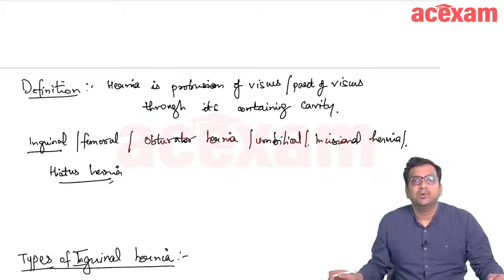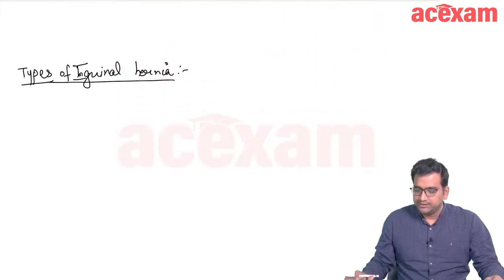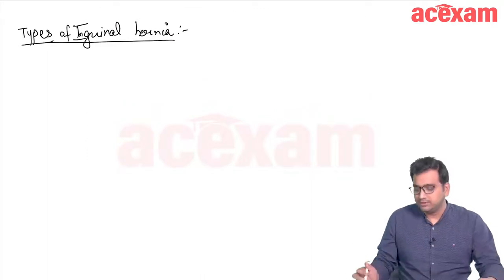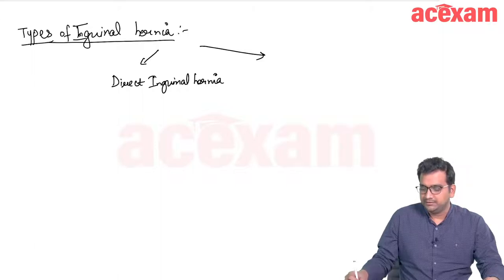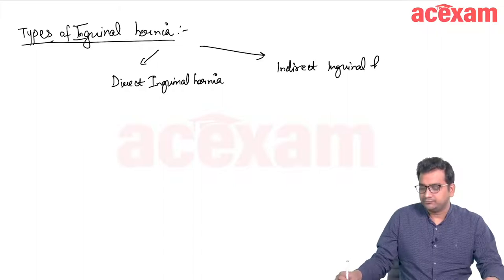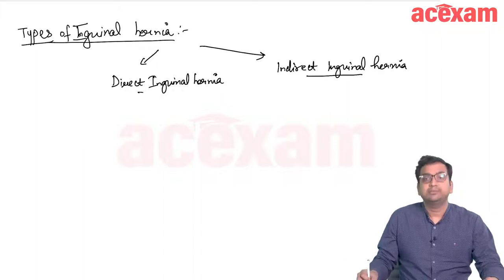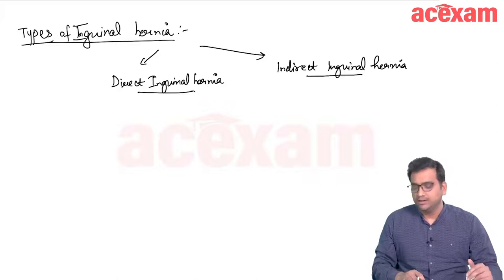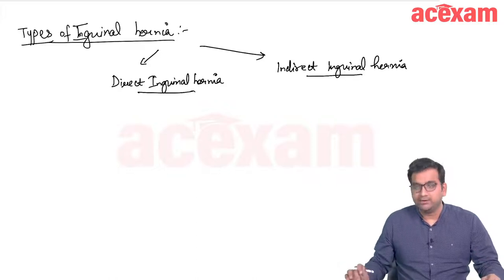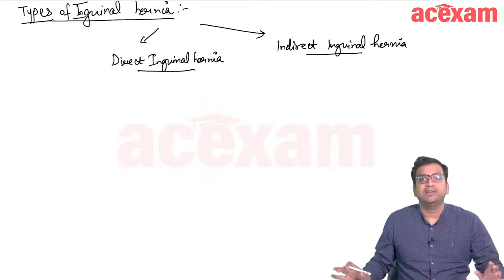We will first start with inguinal hernias. In broad terms, the two main types of inguinal hernias are direct inguinal hernia and indirect inguinal hernia. To understand the types of inguinal hernia, we need to first understand the inguinal canal anatomy.